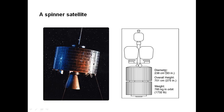This is another spinner satellite with communication equipment and antennas mounted on top, and motors mounted inside the drum, with jet thrusters placed on the body. The diameter is approximately 93 inches, the overall height is 75 inches, and the weight is 785 kg in orbit.